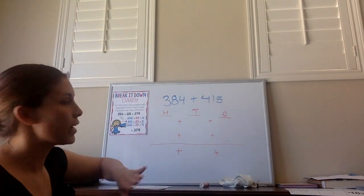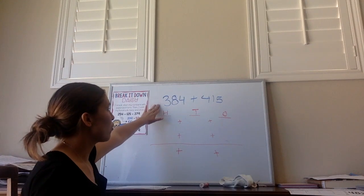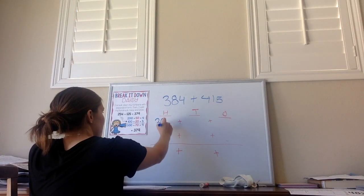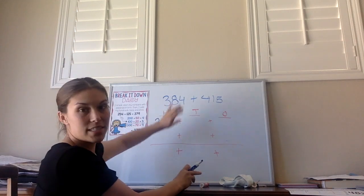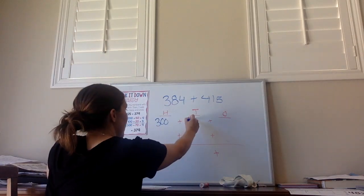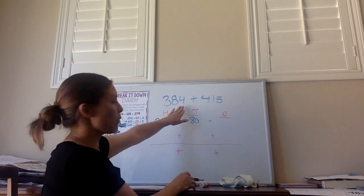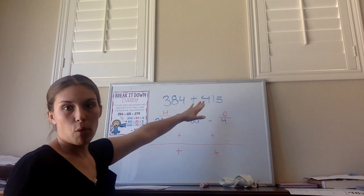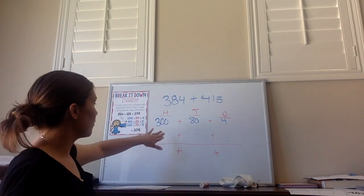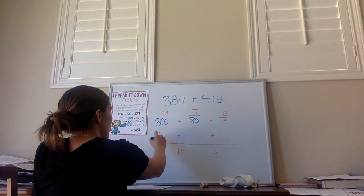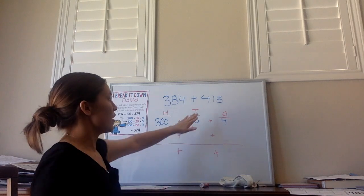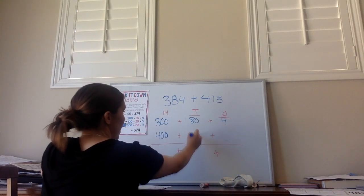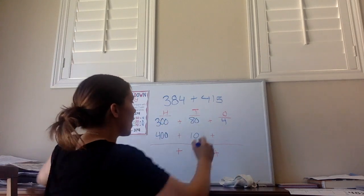So 384 — we're going to break it up. In 384, there are 300s, there are eight tens which equals 80, and we have four ones. Now I'm going to break up 415. In 415, there are four hundreds, there is one ten so we simply write 10, and there are five ones.